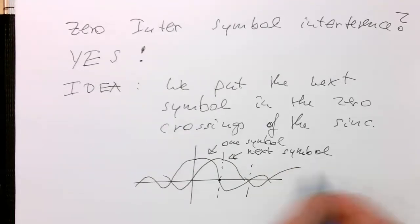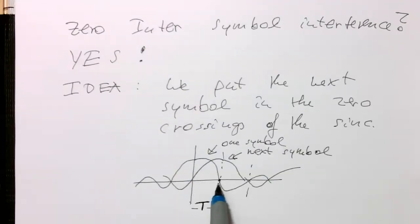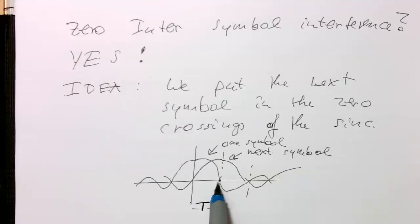Therefore, if we define our symbol rate T as the symbol interval, the time from here to the zero crossing here, then obviously we will be avoiding any inter-symbol interference. This leads us to the so-called Nyquist rate.